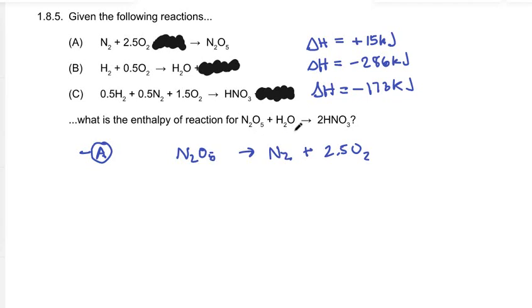We need an H2O on the left and the only place that's coming from is reaction B so again we must do a flip. Minus reaction B: H2O flips to the left side, H2 flips to the right side and 0.5 O2 flips to the right side.